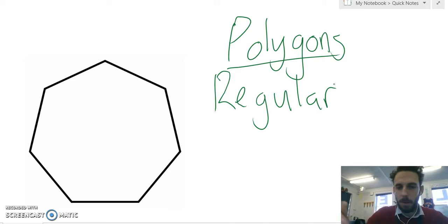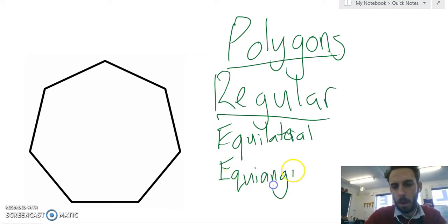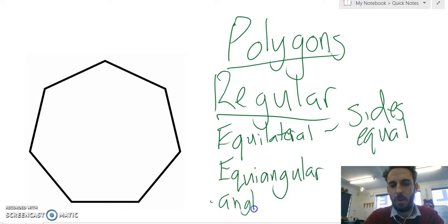A regular polygon has to be two things. It has to be equilateral. Equilateral is something I still struggle with spelling. And it has to be equiangular. Another funny word that's popped up. Those two things mean, does it have sides that are all equal? And does it have angles that are all equal?